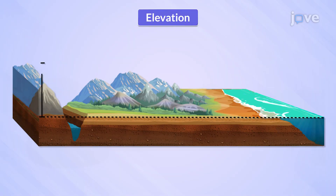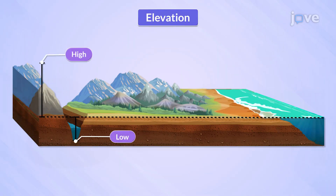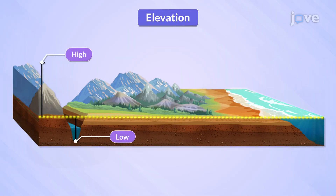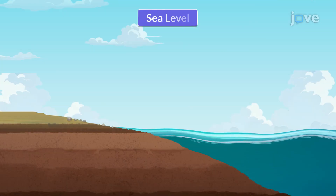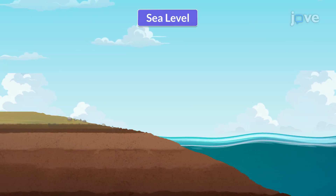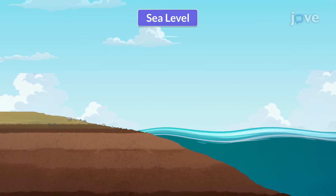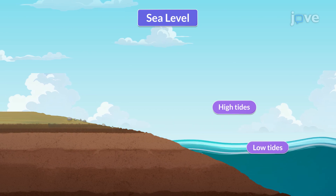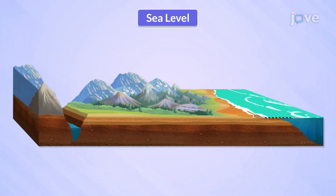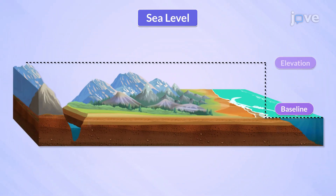Elevation refers to how high or low a place is in relation to sea level. But what is sea level? It's the average height of the ocean's surface, measured between high and low tides. Scientists use this as a baseline to measure elevation for landforms.